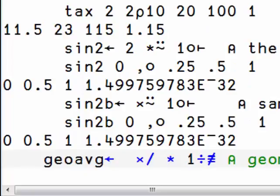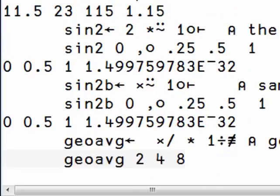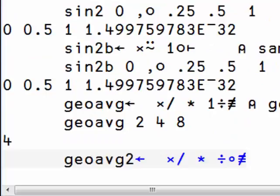Here we compute the geometric average. This is a 5-tine train. We have a fork within a fork. This is the same thing, except that this time, the right-hand function is a composed function.